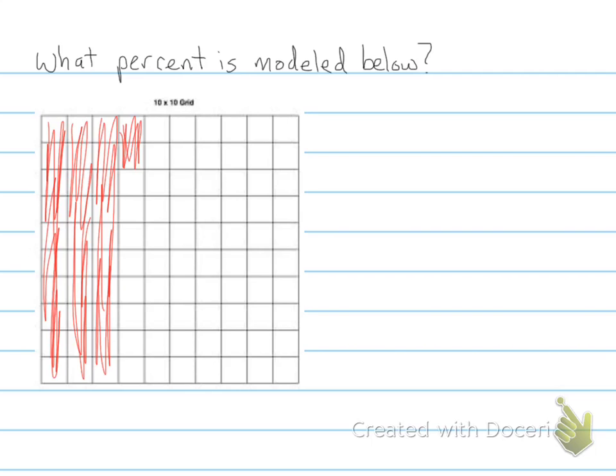A couple more examples. You will also have to be able to recognize by looking at a model of percents how much it is representing. In this case, the question asks what percent is modeled below. All you need to do, since this is a hundred grid, is count the number of squares that are colored. So here's 10, there's 20, 30, and there's one, two. This shows 32 percent is modeled there.